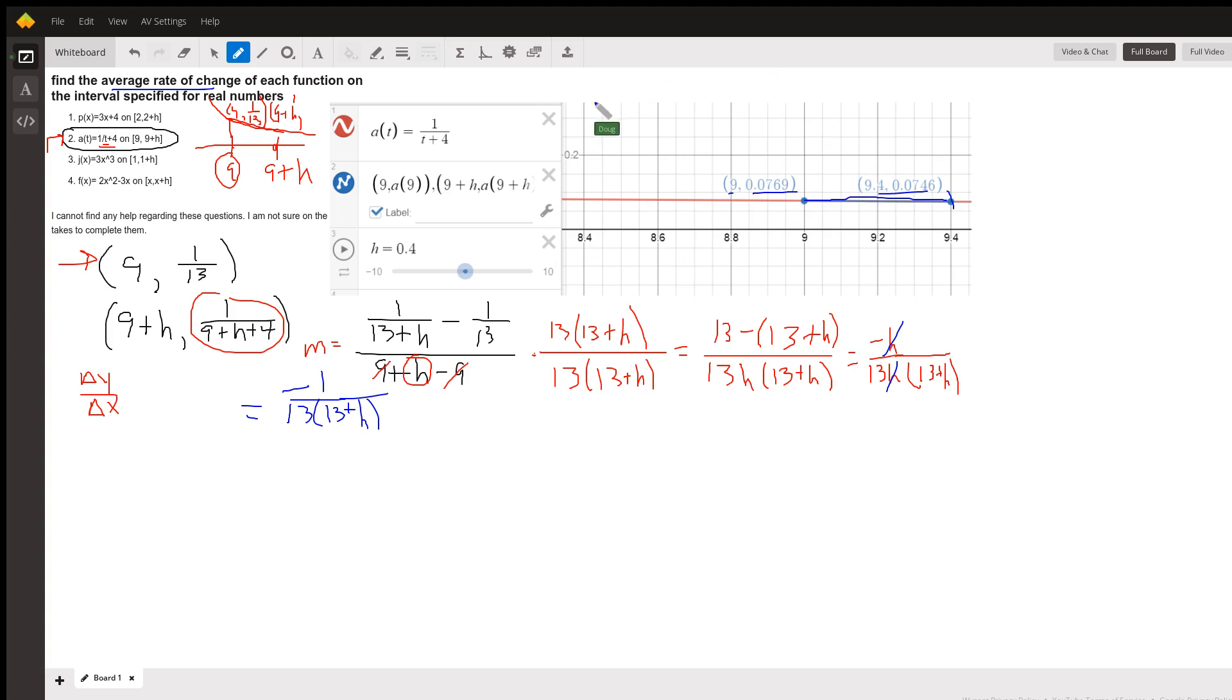And the slope of that line would be changing y over changing x, the average rate of change. There you go. Hope that helped. If you have any questions, post a comment. I will also post the URL to this Desmos graph so you can take a look.